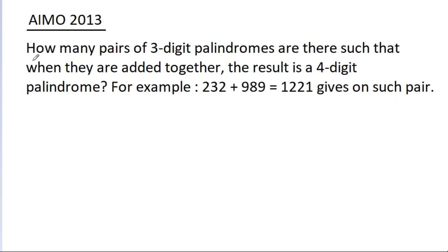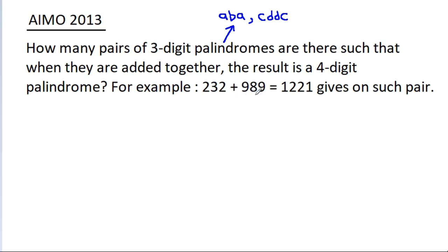In this video, we have to find how many pairs of 3-digit palindromes there are. Palindromes means numbers like ABA, CDBC, etc., such that when they are added together, the result is a 4-digit palindrome. For example, 232 plus 989 is equal to 1221.